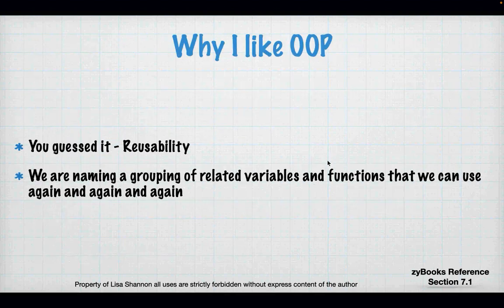Why do I like object-oriented programming? Reusability — it takes reusability to the next level. Basically, you're naming this group of related variables and functions, and you can use it again and again. It makes the code better. Less maintenance: if you design your classes right, there will be less code and less maintenance.